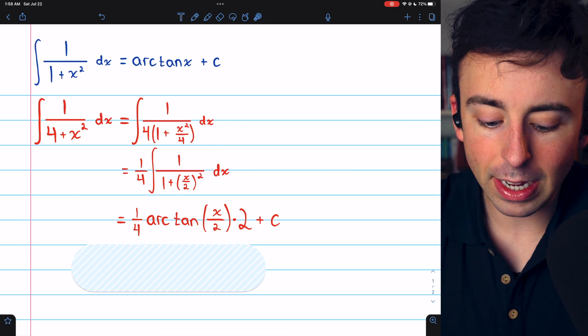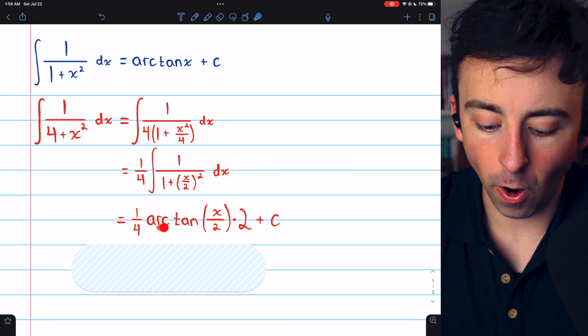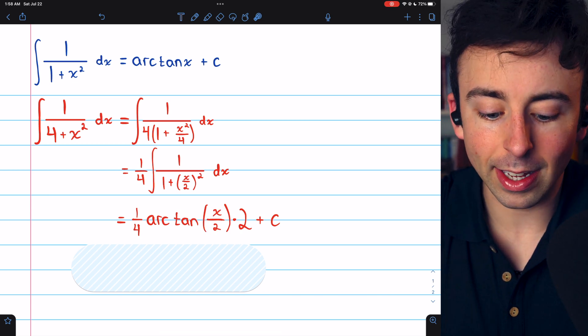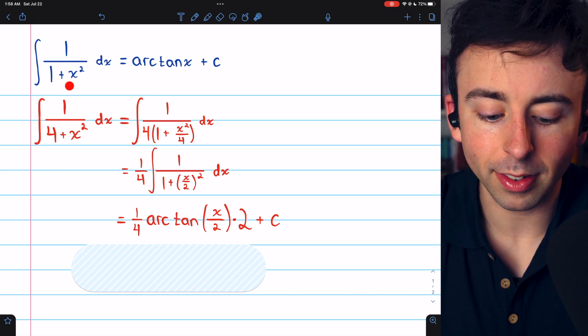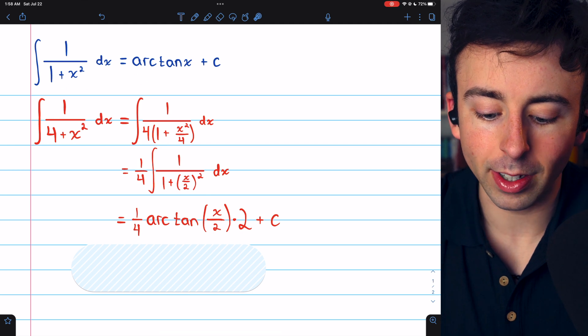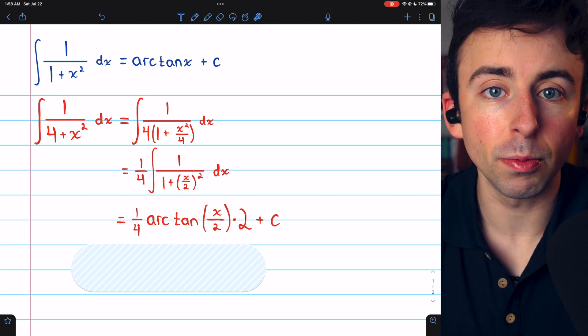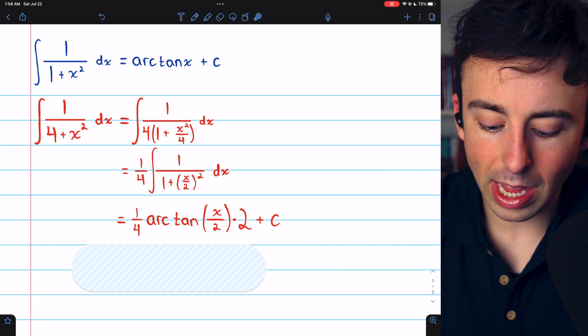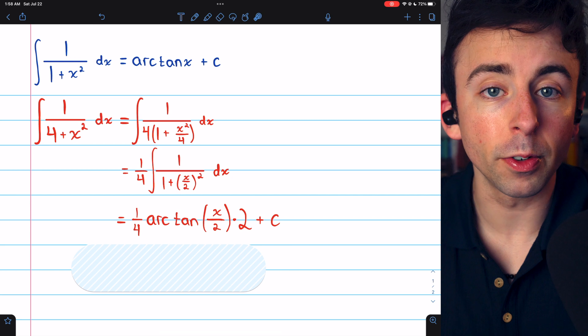What we get when we do this integral is 1 fourth times arctan of that expression that was being squared. Just like in this formula, it's 1 over 1 plus x squared. The integral is arctan of x, the thing that was being squared. In our case, the thing that was being squared was x over 2. So we have arctan of x over 2.